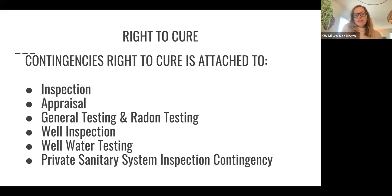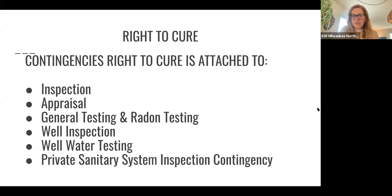The main contingencies that the right to cure is attached to are inspection, the appraisal contingency, the general testing and radon testing contingencies, the well inspection contingency, the well water testing contingency, and the private sanitary system inspection contingency. We're going to really more focus on inspection and appraisal today. I went over inspection last week, and then we'll see how the appraisal and right to cure is worded this week.